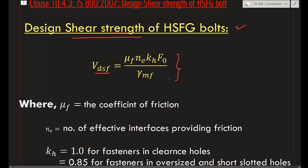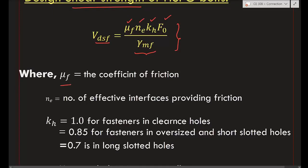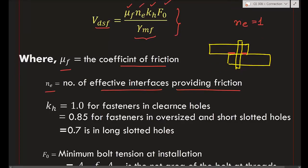The code gives a formula for design shear strength: VDsf = μf × ne × kh × F0 / γmf. Here, μf is the friction coefficient between two surfaces, and ne is the number of effective interfaces providing friction. For a simple two-plate connection, ne = 1. If you have a plate sandwiched between two outer plates connected by a bolt, there are two friction surfaces, so ne = 2.